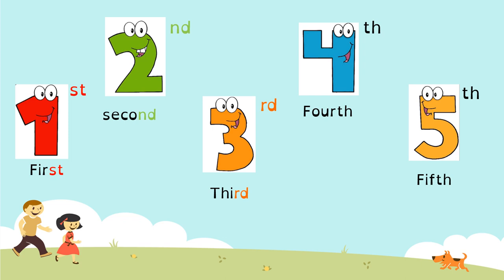Let's see this group of numbers. We have number one, number two, number three, number four, and number five — but they are ordinal numbers.